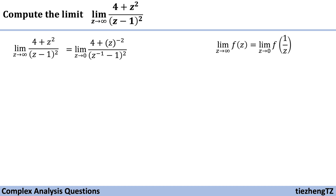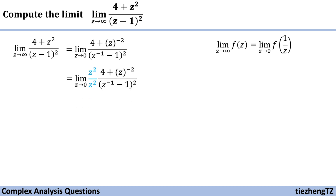The function becomes (4 + z⁻²) / (z⁻¹ - 1)² as z approaches zero. The next step is to rearrange this function by multiplying z² to both the numerator and denominator parts.